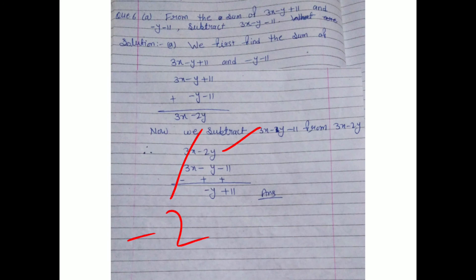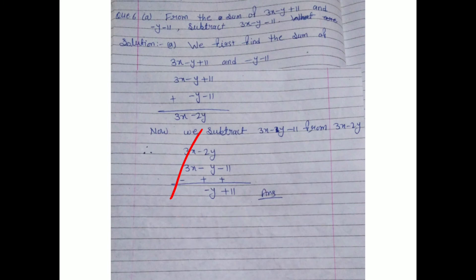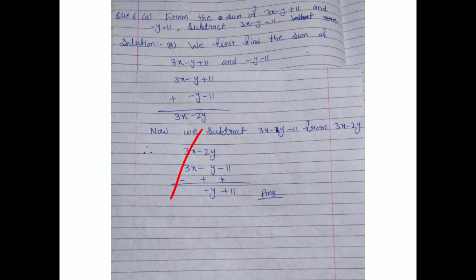Then minus 3x and plus 3x cancel. For the y terms: minus 2y plus y gives minus 1y. And there is no constant term on top, so plus 11 remains. So the final answer is minus y plus 11, or written as minus 1y plus 11.